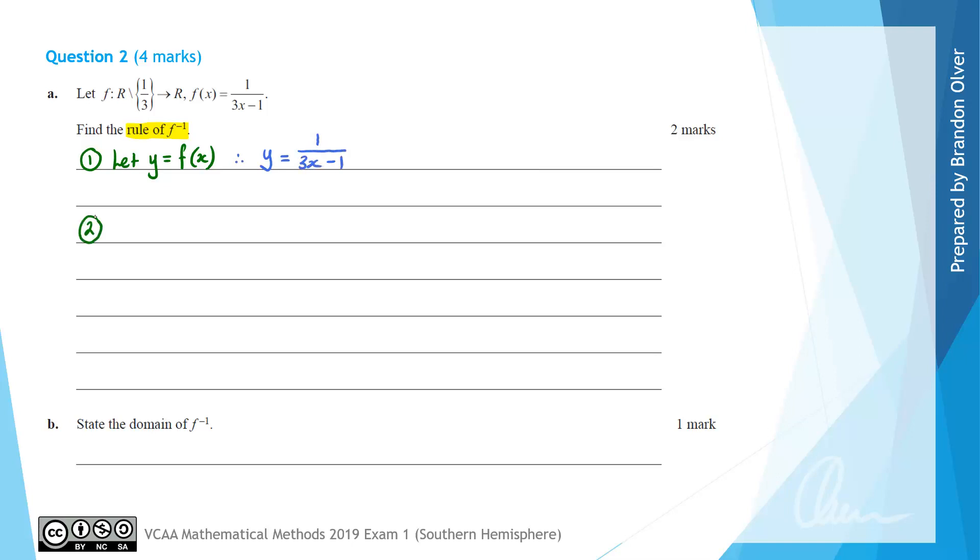The second step is to swap x and y to find the inverse. Therefore instead of having y equals, it will become x equals 1 divided by 3y subtract 1. Our third step is to solve for y.